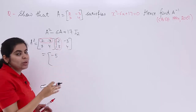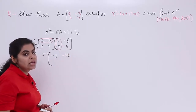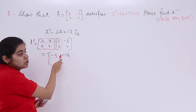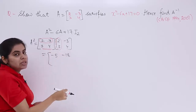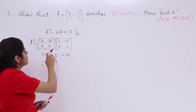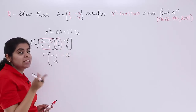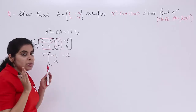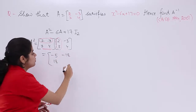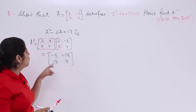For the second row, first column: 3×2 + 4×3 = 6 + 12 = 18. For the second row, second column: 3×(-3) + 4×4 = -9 + 16 = 7. So A² = [-5, -18; 18, 7].